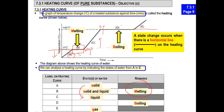What about part D? Boiling is happening here. Remember, this is the liquid state, and then this is the gaseous state. So what do you think is the state in between? It has to be a mixture too — it will be the liquid and gaseous state, liquid and gas.